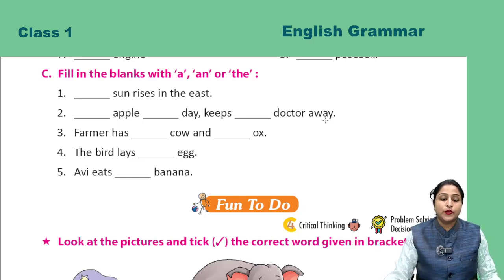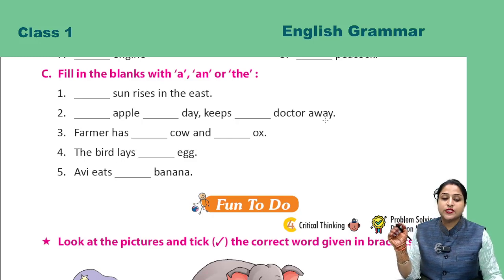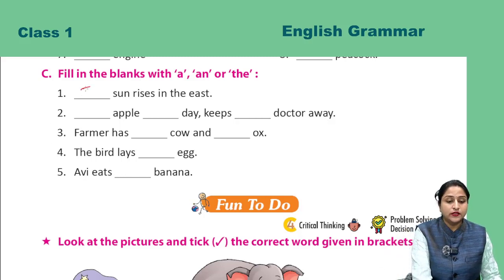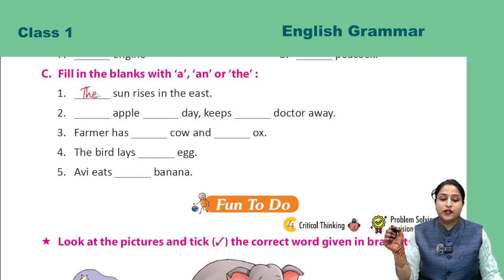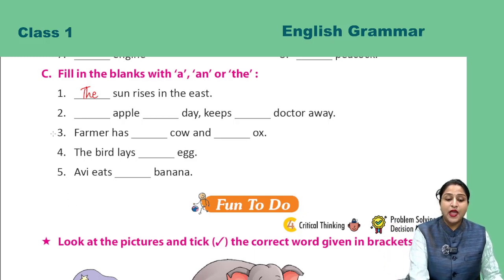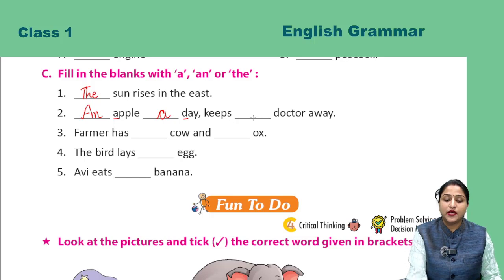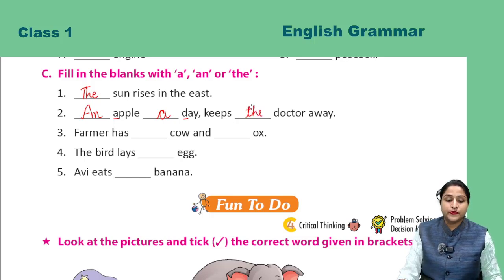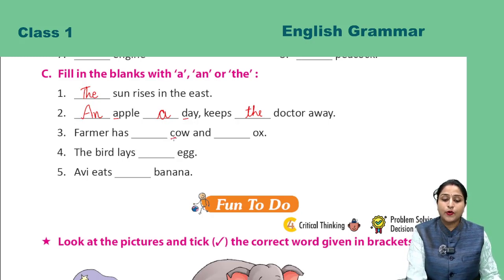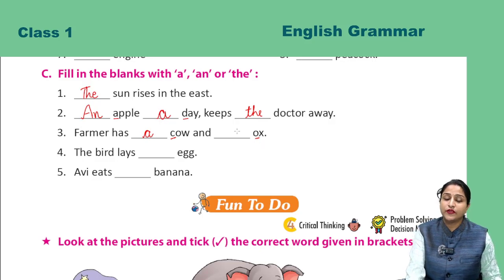Now next exercise: Fill in the blanks with A, AN, and The. Aapko A, AN, aur The teeno in blanks mein fill karna hai. First: dash sun rises in the east — sun ke liye the lagana hai, sun ek hi hota hai, to the sun. Next: dash apple a dash day keeps dash doctor away — apple mein A hai, vowel hai, to AN apple; day D se start hai, consonant, to A day; doctor D se start hai to A — an apple a day keeps the doctor away. Next: A farmer has dash cow and dash ox — cow C se start hai, consonant, to A cow; ox mein O vowel hai, to AN ox. Baaki ke dono part aap khud try karenge.